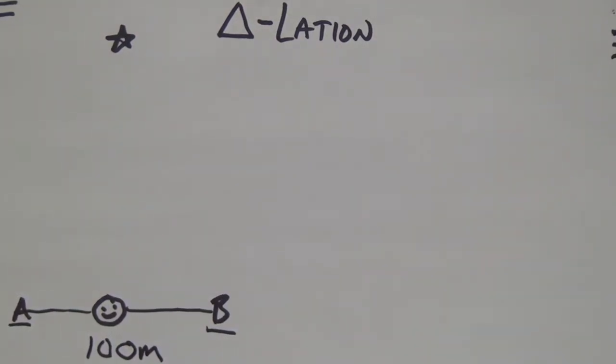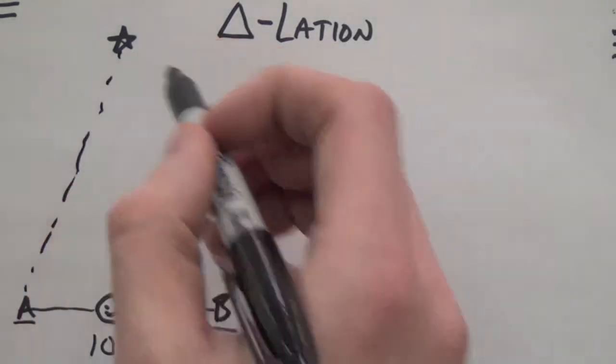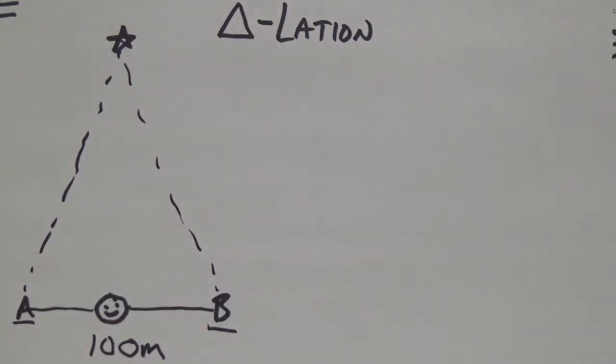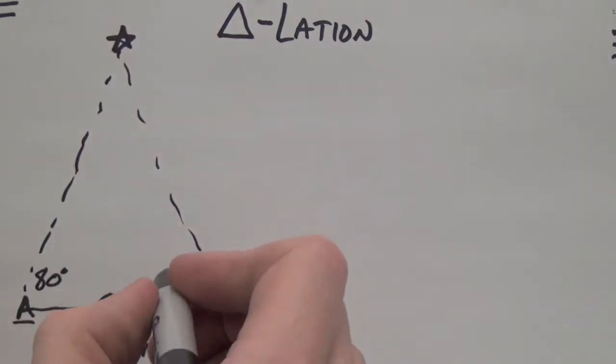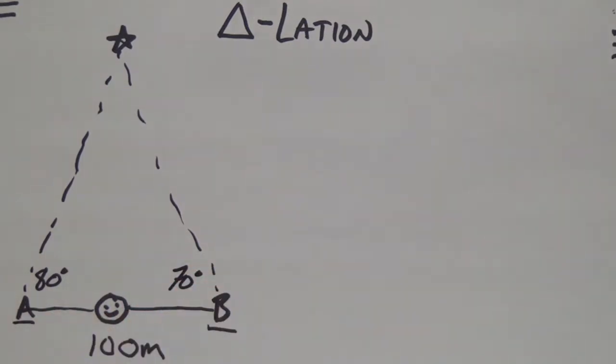So, 100 meter distance, point A and B. This telescope's looking at this star. Same star. And on the old telescopes, you can measure the angle. So, let's say, just, once again, I'm just picking numbers. I don't care. Let's say this is at an 80 degree angle from point A. And the same star looking at it is 70 degrees. I repeat. I just picked these numbers.